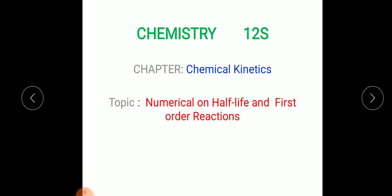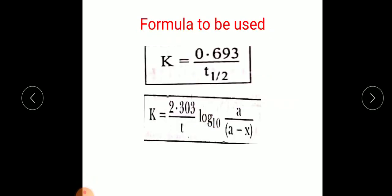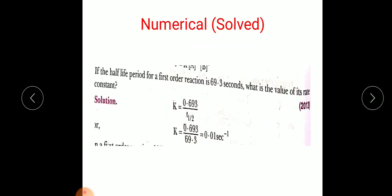The two formulas we are going to use: the first one from half-life is k = 0.693 / T½, or equivalently T½ = 0.693 / k. The second equation derived for first-order reactions is k = 2.303 / t × log(a / (a − x)), where k is the rate constant, t is time, a is the initial concentration, and (a − x) is the final concentration of the reactant. You need to remember these two equations.